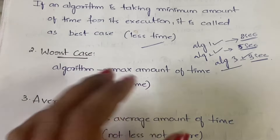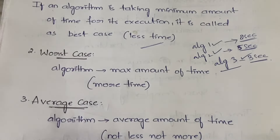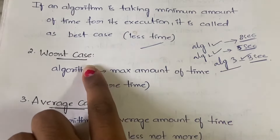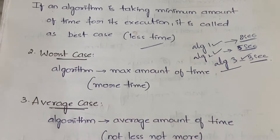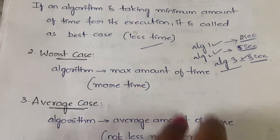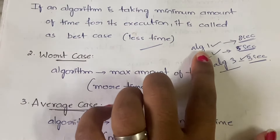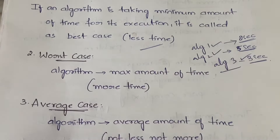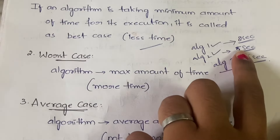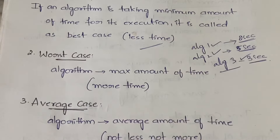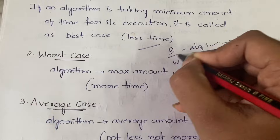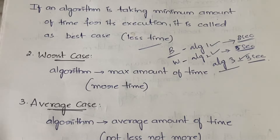Next is worst case. Worst case means the algorithm is taking the maximum amount of time to complete its execution. Among our three algorithms, Algorithm 2 is taking 5 seconds — the maximum — so it comes under the worst case.